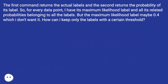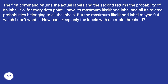The first command returns the actual labels and the second returns the probability of its label. So for every data point I have its maximum likelihood label and all its related probabilities belonging to all the labels. But the maximum likelihood label may be 0.4, which I don't want. How can I keep only the labels with a certain threshold?